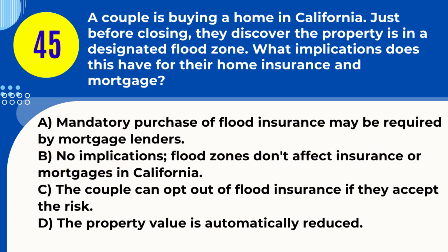Question 45. A couple is buying a home in California. Just before closing, they discover the property is in a designated flood zone. What implications does this have for their home insurance and mortgage? A. Mandatory purchase of flood insurance may be required by mortgage lenders. B. No implications; flood zones don't affect insurance or mortgages in California. C. The couple can opt out of flood insurance if they accept the risk. D. The property value is automatically reduced. Answer: A. Mandatory purchase of flood insurance may be required by mortgage lenders. Explanation: Properties in designated flood zones in California typically require owners to purchase flood insurance, especially if they have a mortgage.